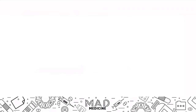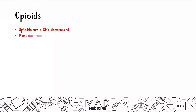Let's talk about opioids. Opioids are a CNS depressant — this is going to be the last CNS depressant we're going to be talking about, after alcohol and benzos and barbiturates. This is the most common cause of drug overdose in the United States, and a very hot-button topic because opioid addiction is very high and very common right now.